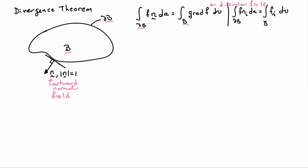And if I want to write this in indices it's f n i d a is equal to f comma i d b so I've used the comma notation to represent the components of the gradient of f.